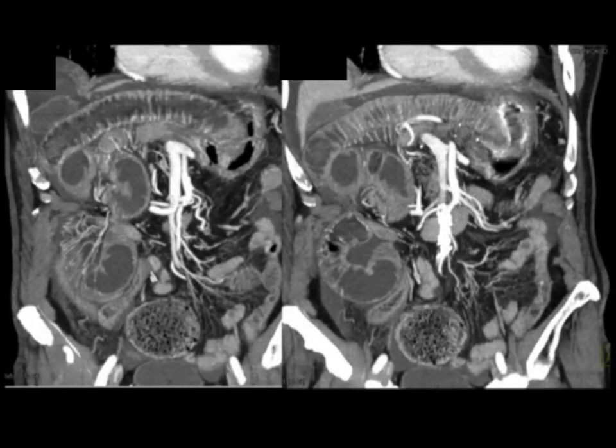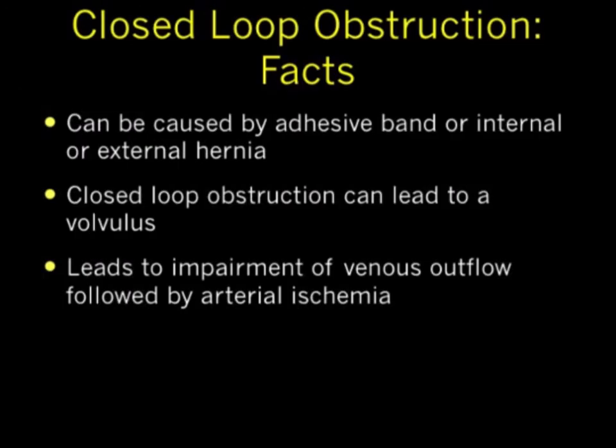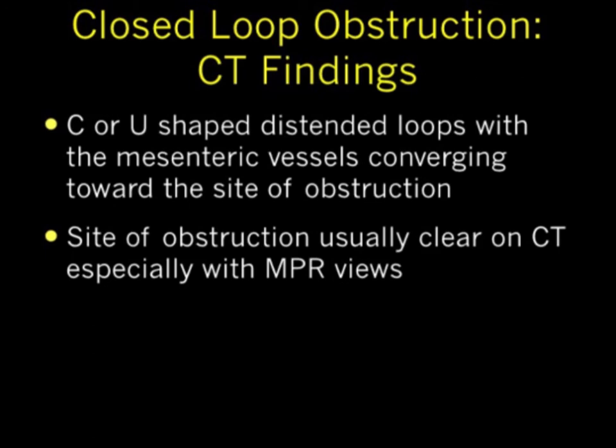This idea of closed loop obstruction is so important. It can be caused by adhesive bands or internal or external hernia. Closed loop obstruction can lead to volvulus, which leads to impairment of venous outflow, followed by arterial ischemia and infarction. The CT findings include C or U-shaped distended loops with the mesenteric vessels converging toward the site of obstruction. The site of obstruction is best seen on coronal views.